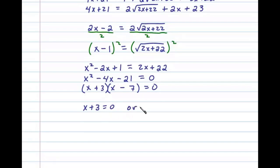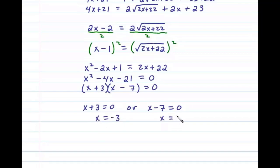So either x plus 3 equals 0 or x minus 7 equals 0, giving us two possible solutions: x equals negative 3 or x equals 7.